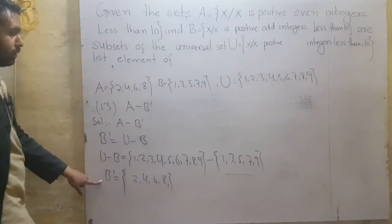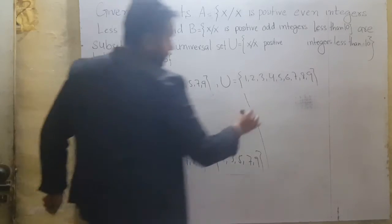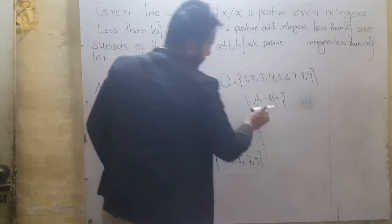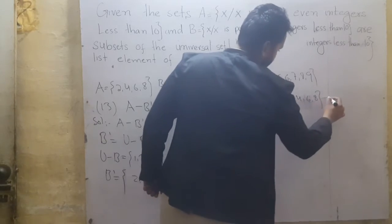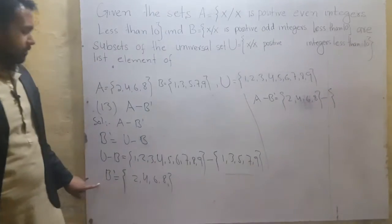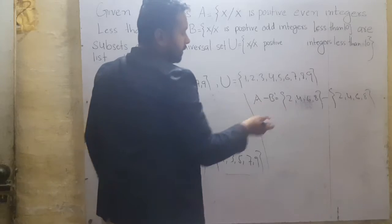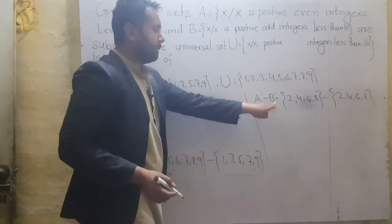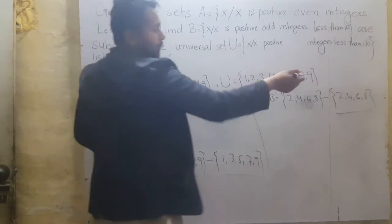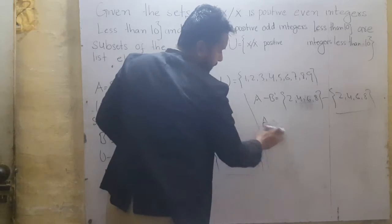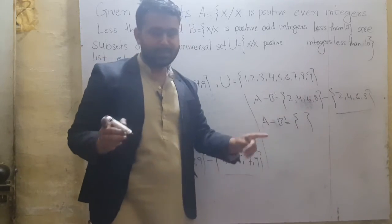B complement मिल गया {2, 4, 6, 8}. Further, A difference B complement is equal to: set A elements are {2, 4, 6, 8} and B complement is also {2, 4, 6, 8}. Set A minus B complement — since both sets have the same elements, everything gets subtracted. क्या मैचेगा? Nothing. इसलिए the answer is the null set — both sets have the same elements so all are subtracted.